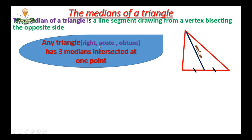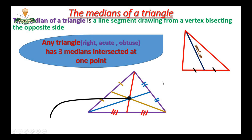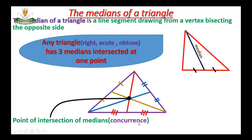In any triangle, there are three medians that intersect at one point. These three medians intersect at one point. This point is the intersection point of the medians of a triangle, or we call it the point of concurrence.